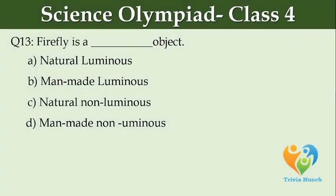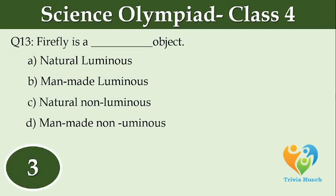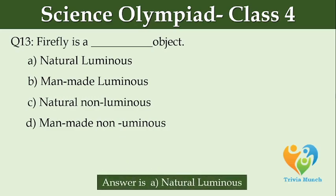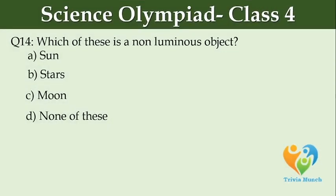Firefly is a dash object. Option A: natural luminous. Option B: man-made luminous. Option C: natural non-luminous. Option D: man-made non-luminous. Which of these is a non-luminous object? Option A: sun. Option B: stars. Option C: moon. Option D: none of these.